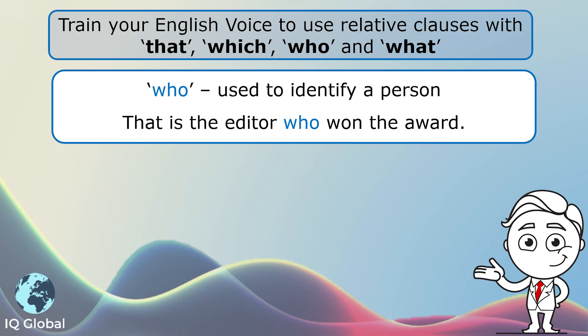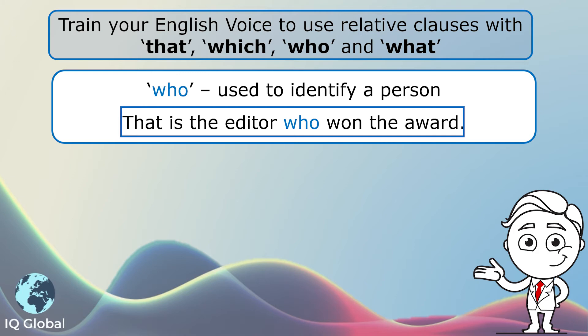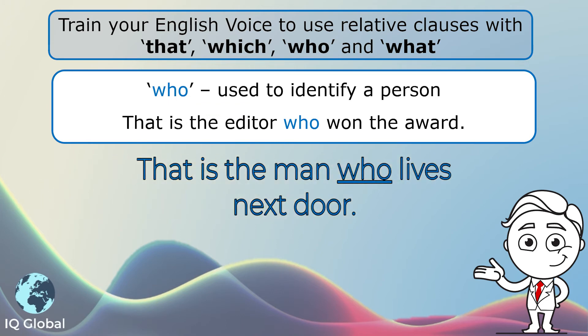Next, 'who'. Who is used to identify a person. For example: 'That is the editor who won the award.' We are using the word 'who' to identify and give more information about the editor. Another example: 'That is the man who lives next door.' We are giving more information and identifying a person — the man. So we use the word 'who' in the defining clause.